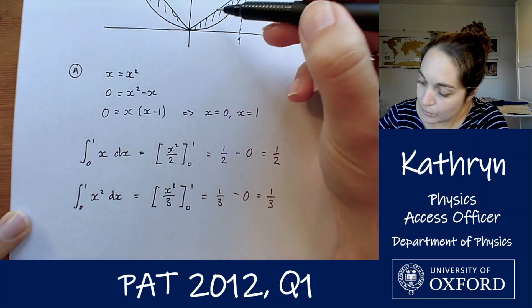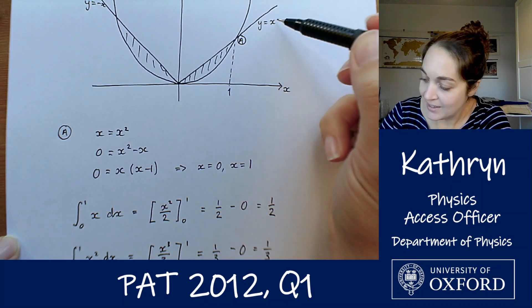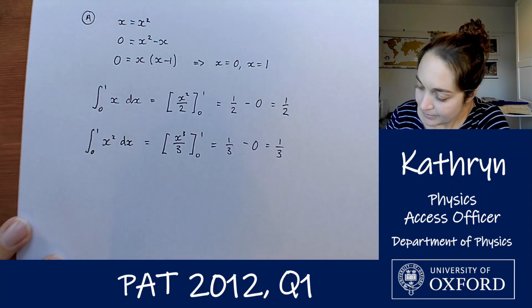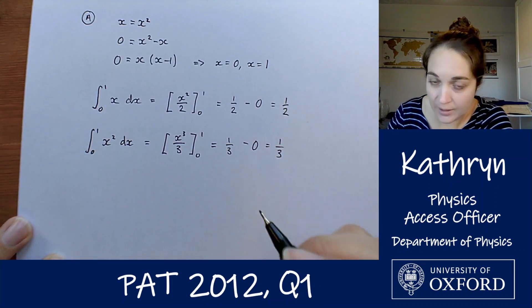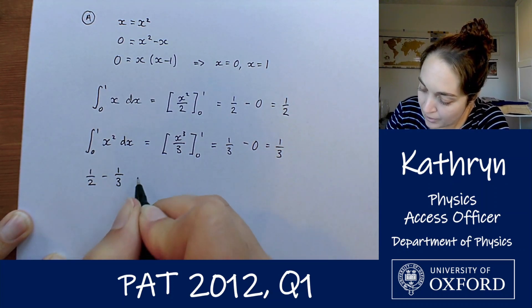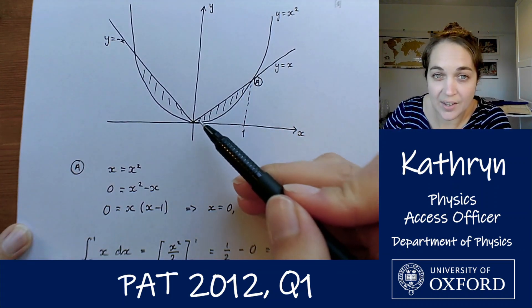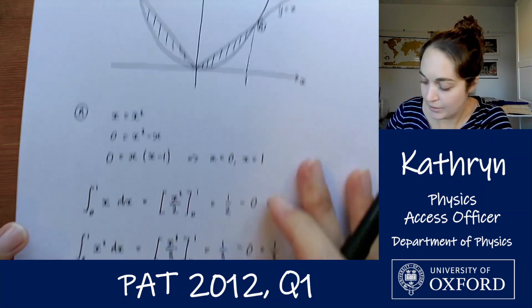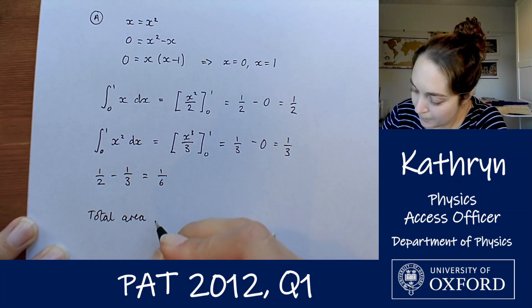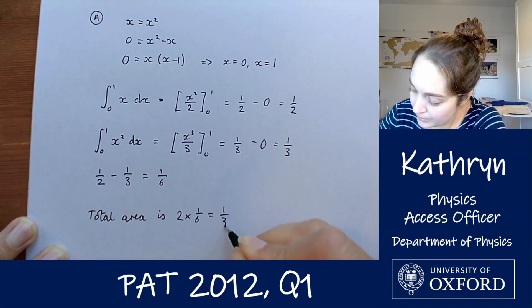So we're going to do the triangle minus the sort of curvy bit, i.e. the area under y equals x, minus the area under y equals x squared. So that is a half minus a third. So a half minus a third equals a sixth. And that is the area of this shaded side just on this right-hand half, so total area is going to be 2 times that. 2 times a sixth, which equals 1 third.